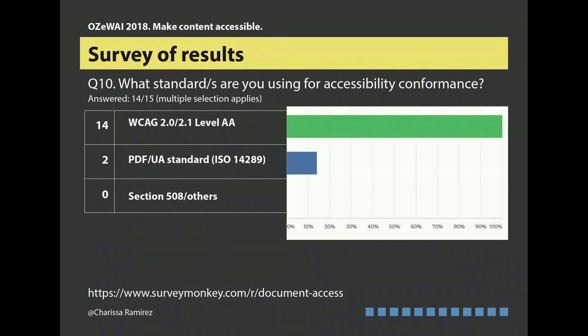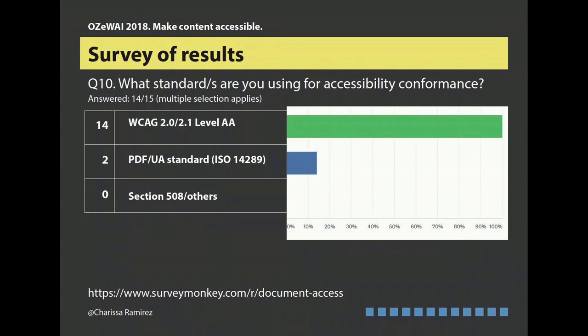What will help improve your work in accessibility? 12 of the 15 answered training, a community of practice, software, and tools for fixing issues. I think that's a very good balance, because you cannot just solve the problem by just having more tools. I think it's going to be solved by having more community of people that you can bounce ideas with, and really good training.